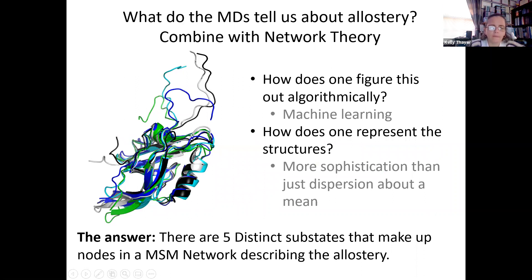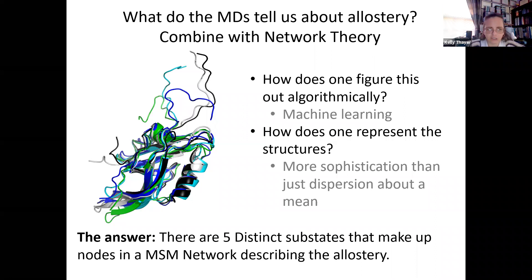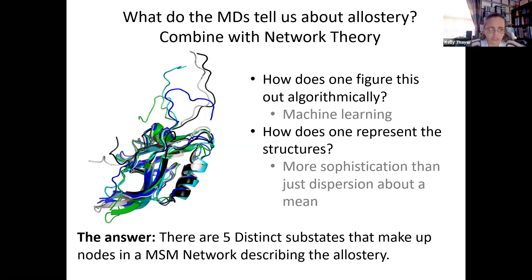This shows an overlay of five different conformational substates obtained from the MD simulations. The question is where these five substates came from and how they tell us something about allostery. The strategy is to first tell you the answer: there are five substates, we transition between these, and there is a role for both conformational capture and induced fit. Then we'll go through how we arrived at that and what is the significance of what we learned.